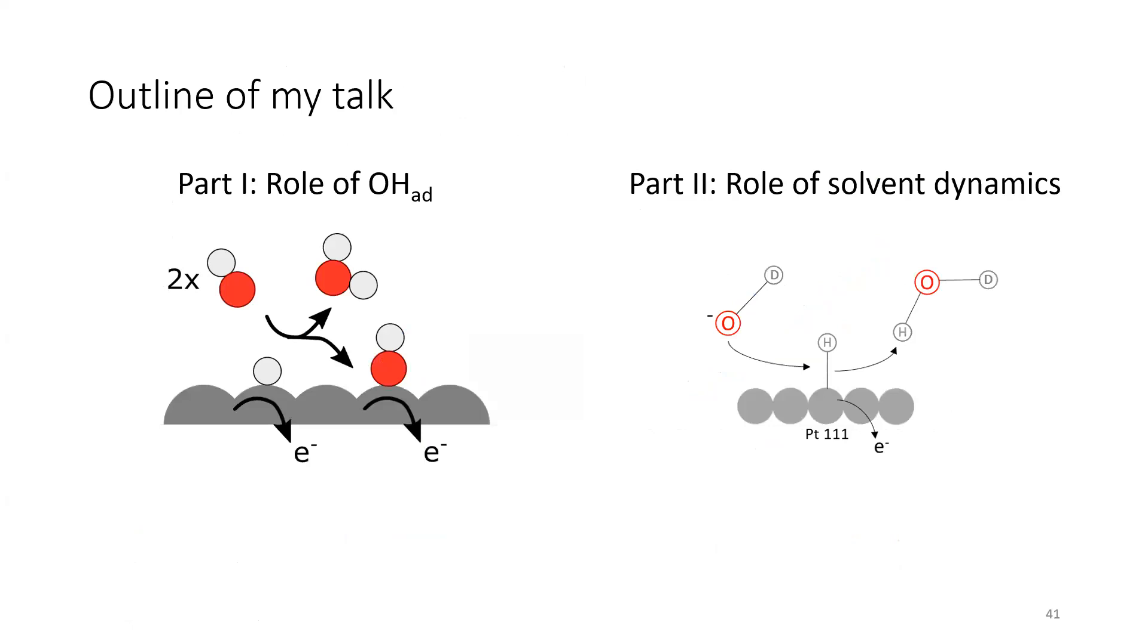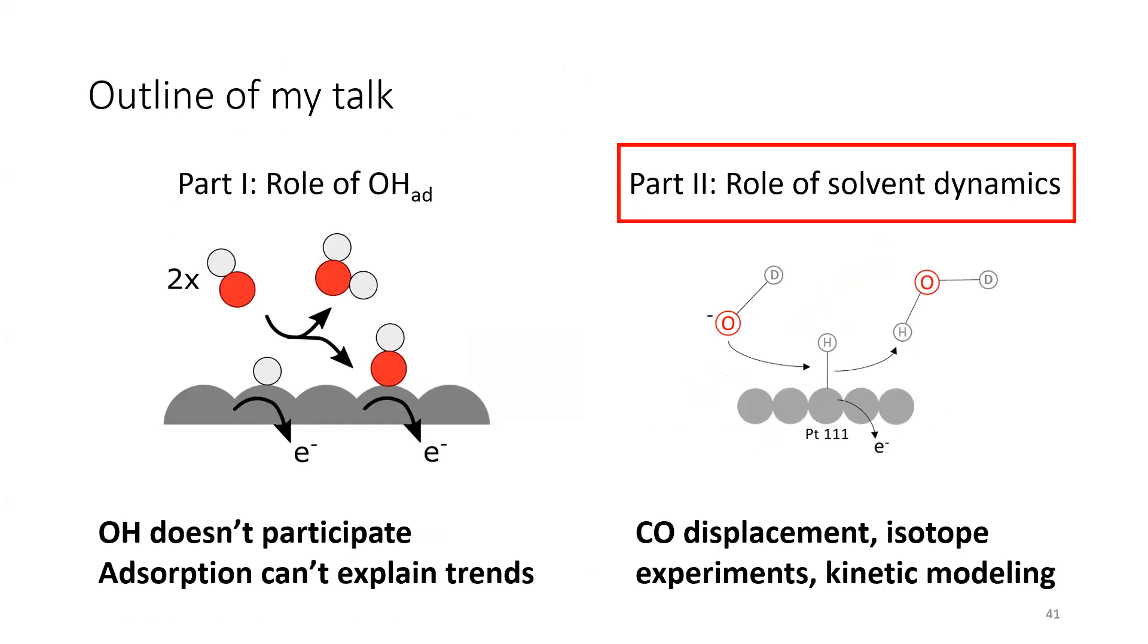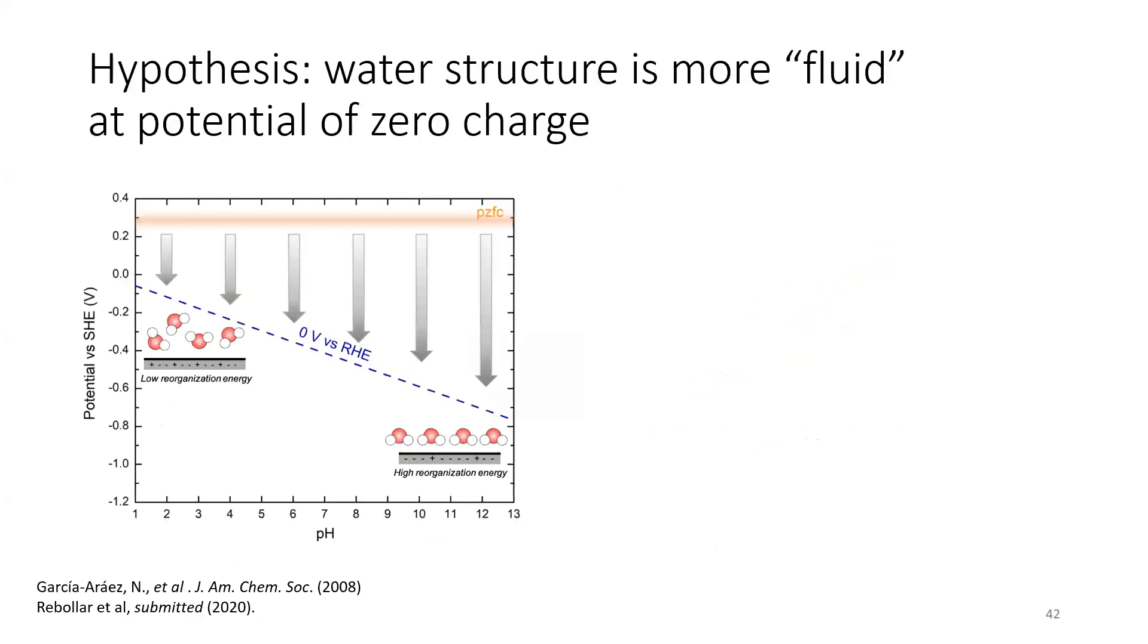All right, so let's go back to the outline. We want to know what OH is doing on the surface. It's a spectator. Adsorption alone is not enough. So what can we look at beyond adsorption? Well, one thing we're going to look at is solvent dynamics, and the way that I'm going to do that is by a combination of CO displacement. We're going to do kinetic modeling again, and we're also going to bring in some isotope experiments.